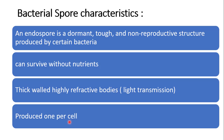The characteristics of spores are that they are dormant, tough, and non-reproductive structures. They are thick-walled and comparatively resistant and dormant due to the presence of a thick-walled cell membrane. They are highly refractive bodies, meaning they have the capacity for light transmission. They can survive without nutrients and are produced one per cell.